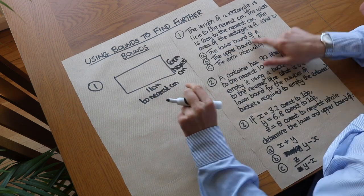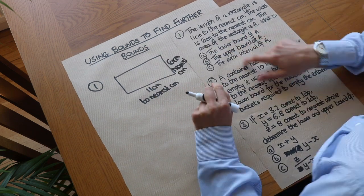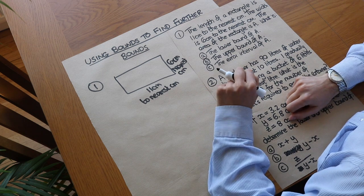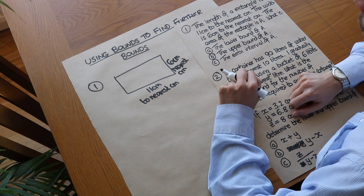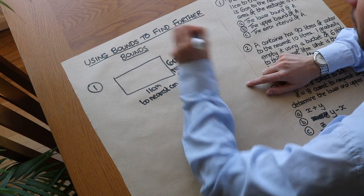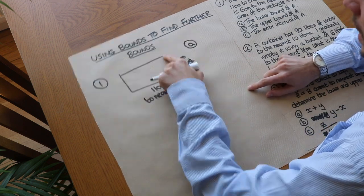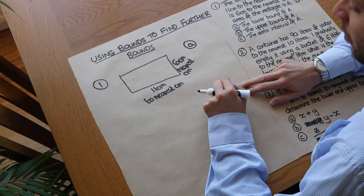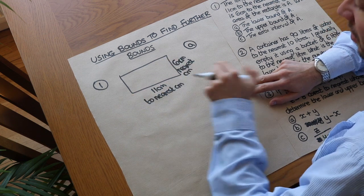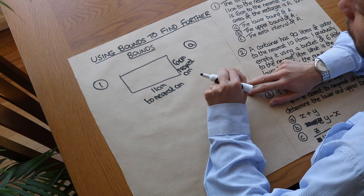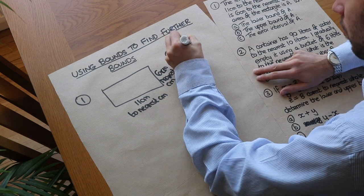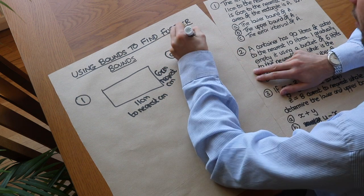We're told the area is A and we want to find the lower bound of A. The lower bound means the lowest possible value the area could have. To get the smallest possible area, that would be the result of using the smallest possible length times the smallest possible width. So I'm going to write area LB to mean the lower bound of the area.